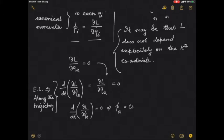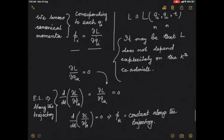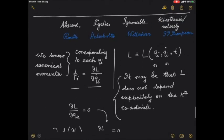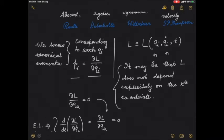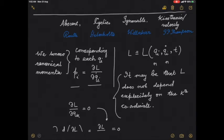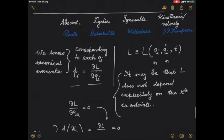This implies p_k is a constant of motion — constant along the trajectory. Such coordinates are called absent, cyclic, ignorable, or kiosthenic ('velocity') coordinates. It is called 'absent' because that coordinate is absent in the expression of the Lagrangian.